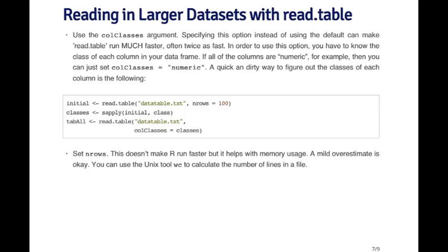Otherwise, if you have a huge dataset, you can read in maybe the first hundred or first thousand rows by specifying the nrows argument. Then loop over each of the columns using sapply and calling the class function. The class function will tell you what class of data is in each column. You can store this information and then read the entire dataset by specifying the colClasses argument.